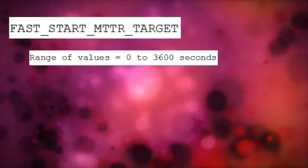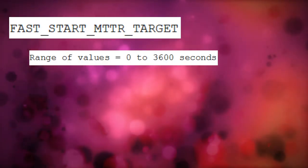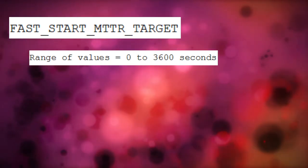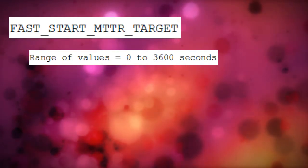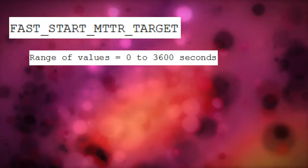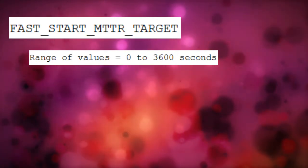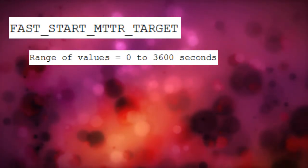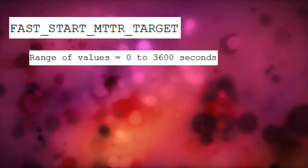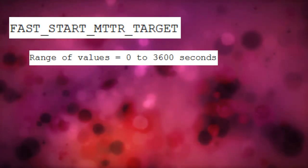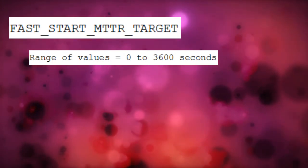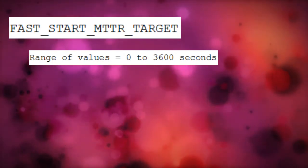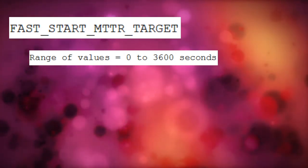The range of values which can be set for this parameter is between 0 to 3600, which is in seconds. Setting a proper value is important. If the value is high then the instance recovery times can get longer. If the value is too low then a lot of overhead would be generated in terms of IO due to frequent incremental checkpointing, which causes the database writer processes to write dirty buffers to data files more often.